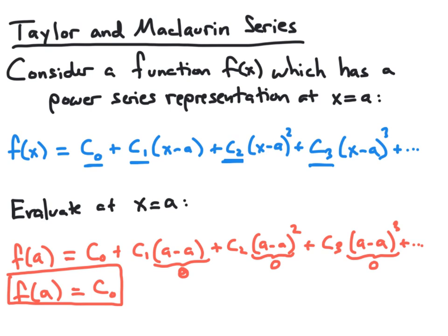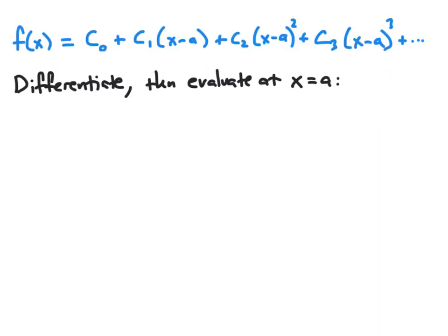Now that we have a formula for c₀, the next step is to find a formula for c₁. To do that, we're going to take our power series representation and differentiate term by term. The first term c₀ is a constant, so its derivative is zero and we omit it. The second term, c₁ times x minus a, gives us 1 times c₁. We leave it written as 1 times c₁ for purposes of the pattern we'll identify in the next steps.